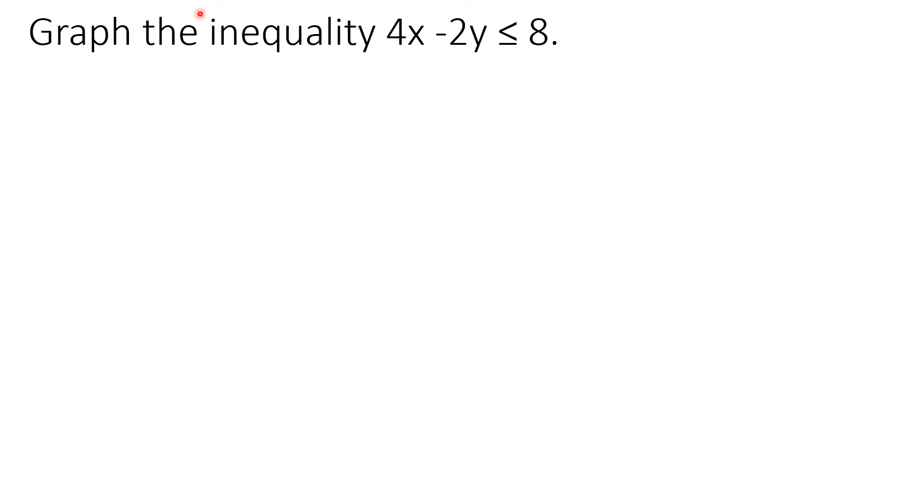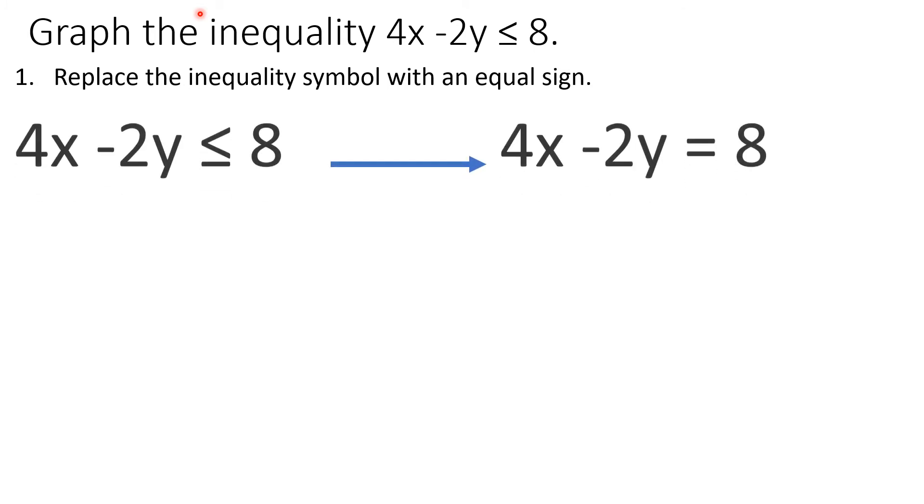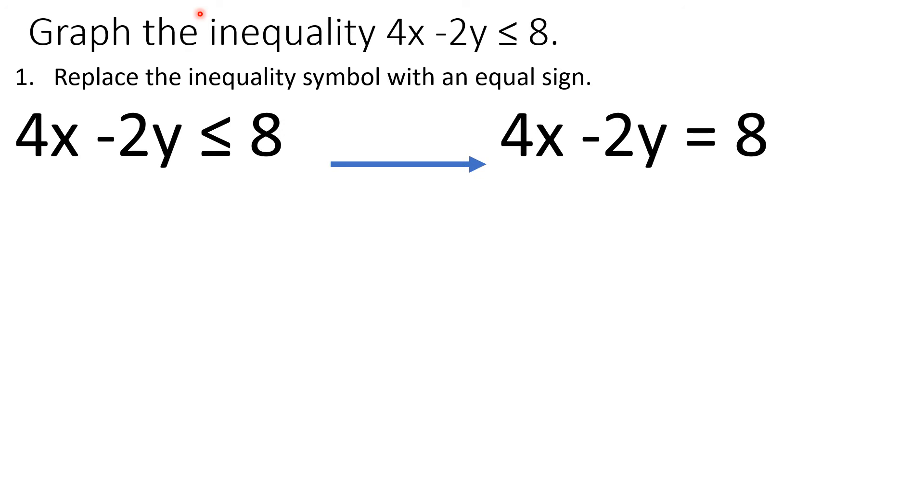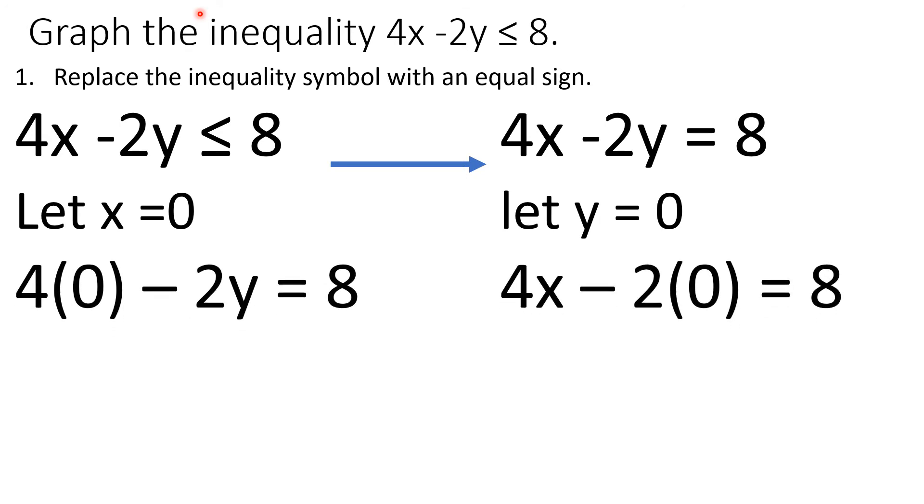Let's graph the inequality 4x minus 2y less than or equal to 8. Replace the inequality symbol with an equal sign. So 4x minus 2y equals 8. After that, let x and y equal 0 because that's the easiest way to get a point. I am using the x-intercept and the y-intercept. If x is 0, what is y? 4 times 0 minus 2y equals 8. What if y is 0? 4x minus 2 times 0 equals 8. So negative 2y equals 8, and 4x equals 8. Y equals negative 4, x equals 2.